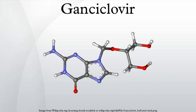Ganciclovir triphosphate is a competitive inhibitor of deoxyguanosine triphosphate incorporation into DNA and preferentially inhibits viral DNA polymerases more than cellular DNA polymerases. In addition, ganciclovir triphosphate serves as a poor substrate for chain elongation, thereby disrupting viral DNA synthesis by a second route.